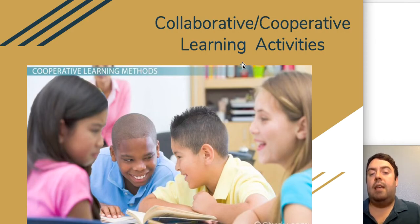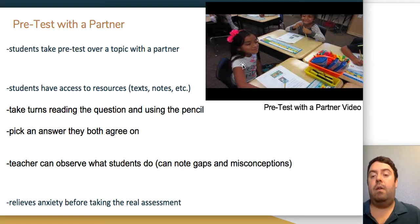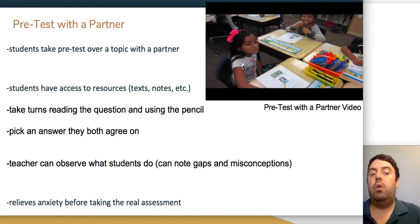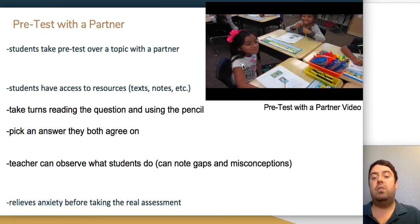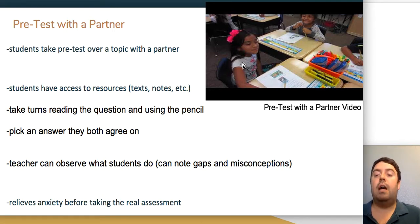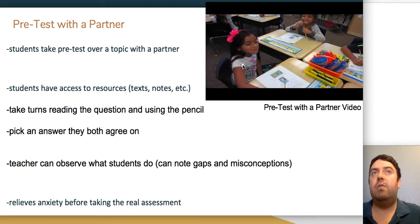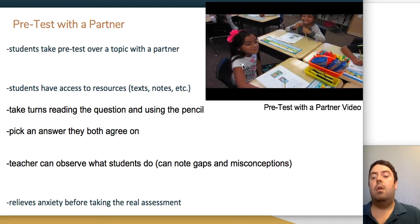Now we'll move from reading strategies to collaborative and cooperative learning activities. One activity is a pre-test with a partner: provide students a pre-test on a topic, give them resources to find the answers, and have them work together with a partner. You can then review it before giving the real diagnostic assessment. This also helps relieve test anxiety—students are less intimidated when they've practiced with a partner before taking the real assessment.